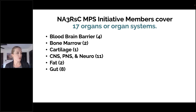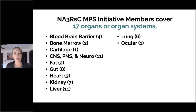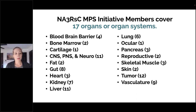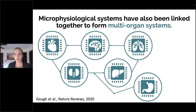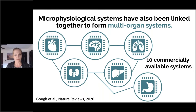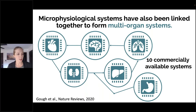Our initiative members cover 17 different organs or organ systems — the number in parentheses is the number of different providers offering that specific organ or organ system. MPS have also been linked together to form multi-organ systems. In our group, there are 10 commercially available multi-organ systems. This is really exciting because these multi-organ systems are able to capture some systemic effects that cannot be captured by any other in vitro system and are wholly reserved for in vivo systems — showing how gut interacts with liver, lung, brain tissue, and more. You can even add a peripheral nervous system to innervate the MPS.